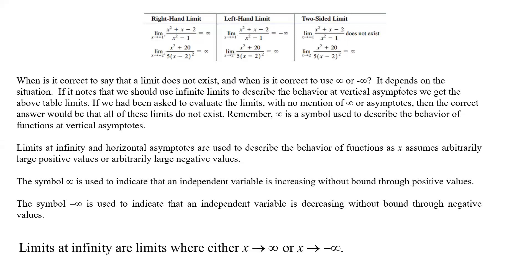Here we're talking about right-hand limits, left-hand limits, and then a two-sided limit. They give two examples. They have one where we have x squared plus x minus 2 over x squared minus 1. We're taking the limit on the right-hand side, going from negative 1 from the right. For the left-hand side, we're going from negative 1 from the left. And here's the two-sided limit, just looking at negative 1.